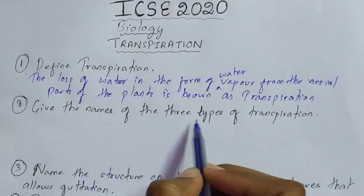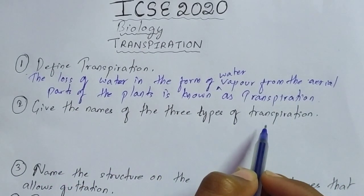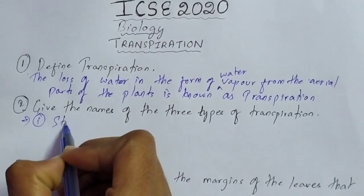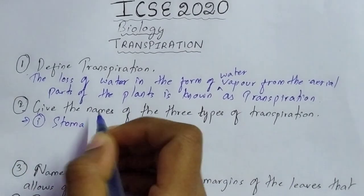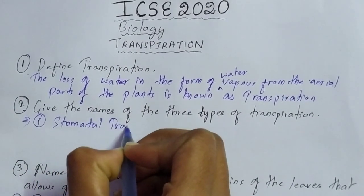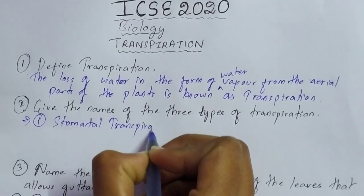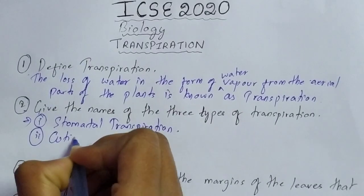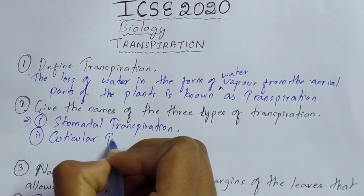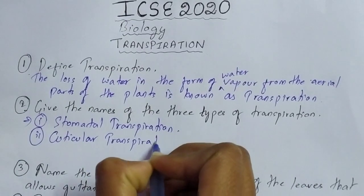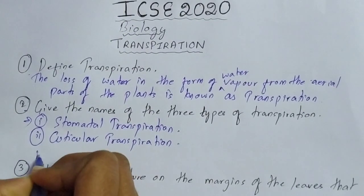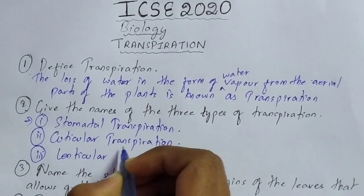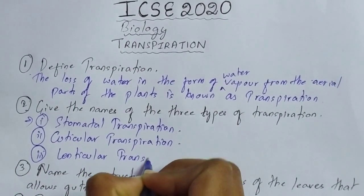The next question is: give the names of the three types of transpiration. There are three types of transpiration. The first one is stomatal transpiration, then we have cuticular transpiration, and the third one is lenticular transpiration. So these are the three types of transpiration.